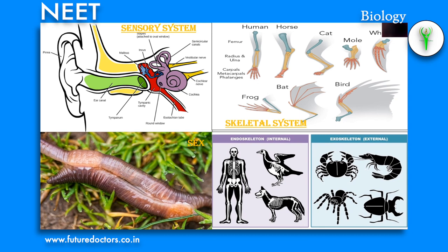Sex: animals generally have sex organs to reproduce sexually. When both male and female sex organs are found in the same individual, it is called hermaphrodite or bisexual or monoecious. Examples: liver fluke, tapeworm, earthworm, leech, etc.